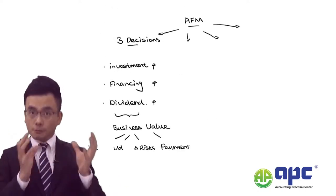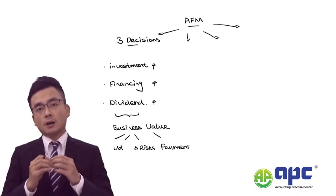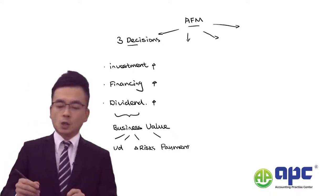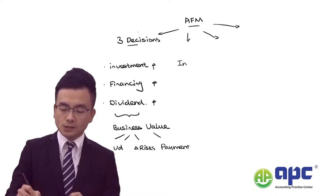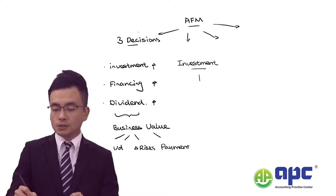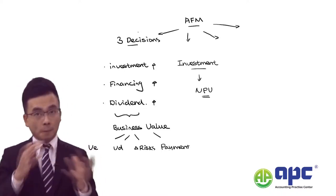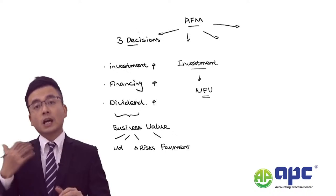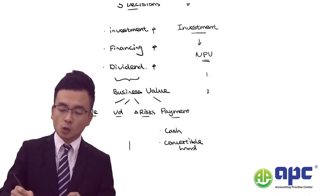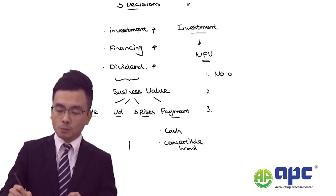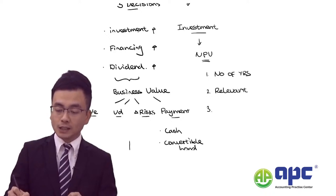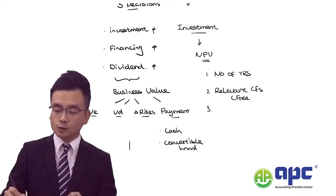Once we've covered the first part of the syllabus, the majority of the syllabus will focus on the basis of the investment decision. We are particularly talking about the net present value analysis, or NPV analysis, based on future cash flows. In order to perform the NPV analysis, we need three factors: the number of years into the future, the relevant cash flows — which I interpret as the free cash flows to firm.